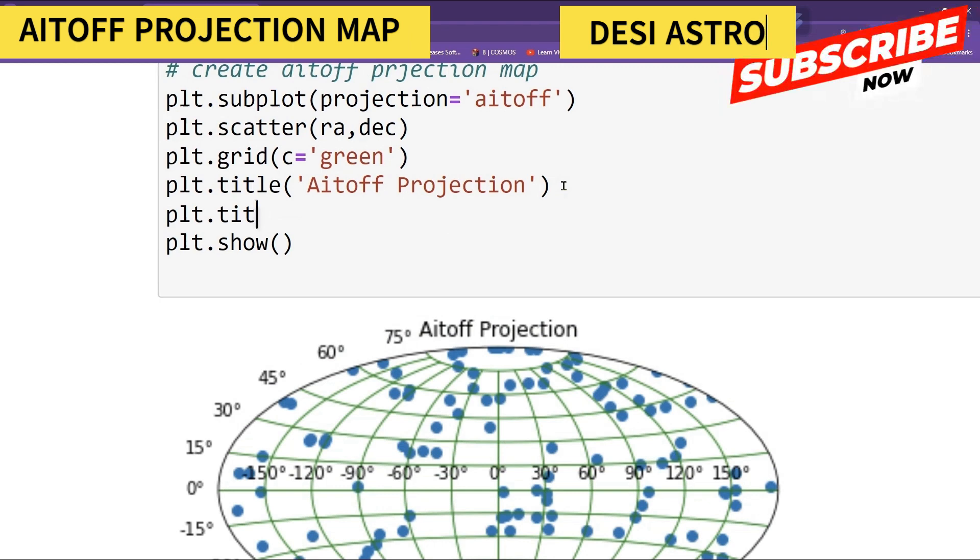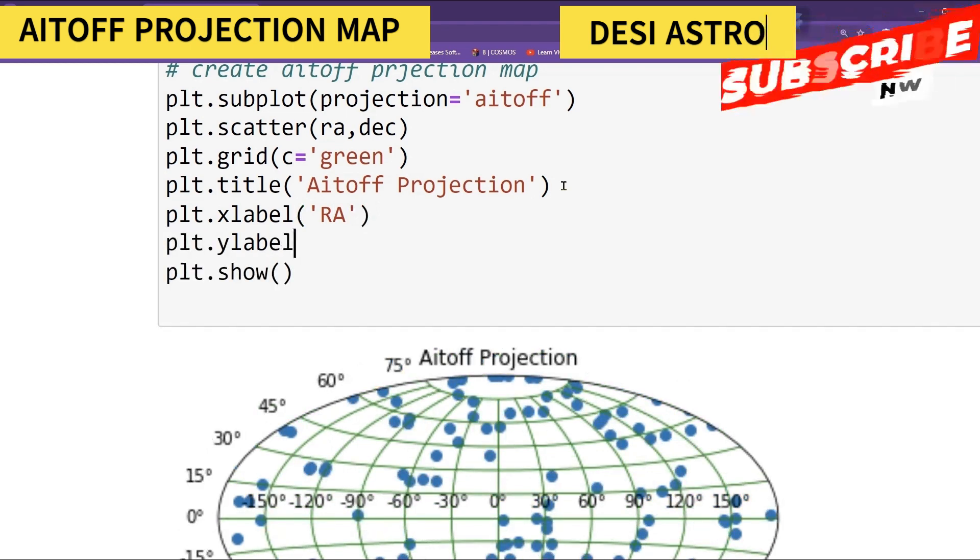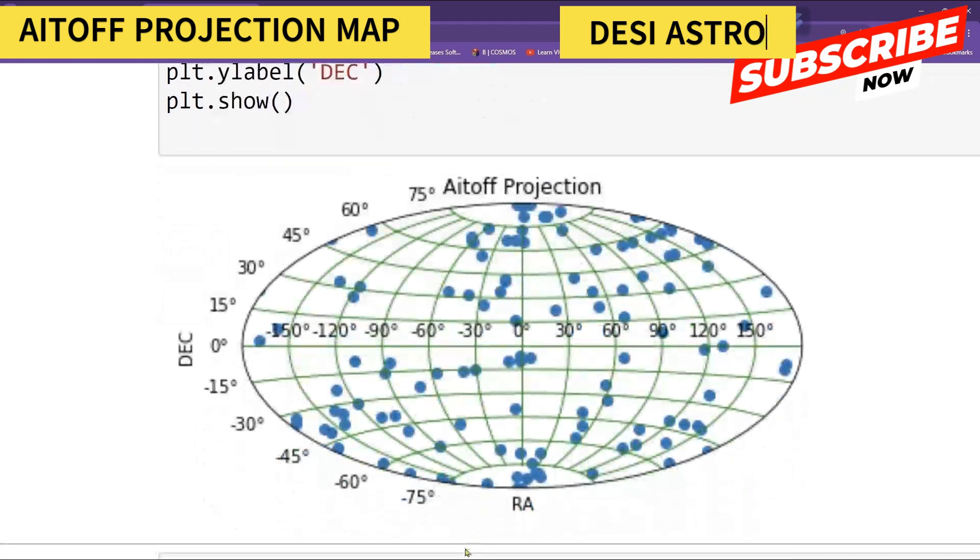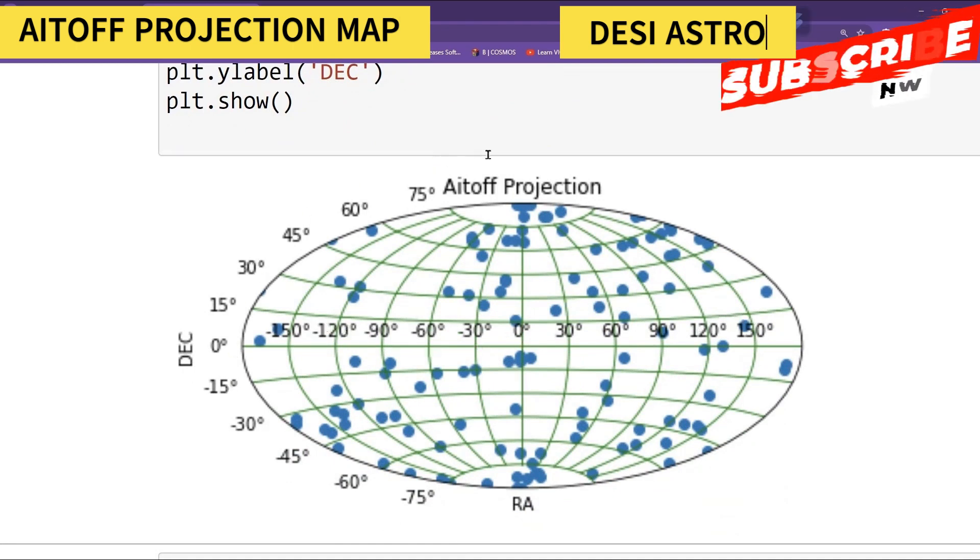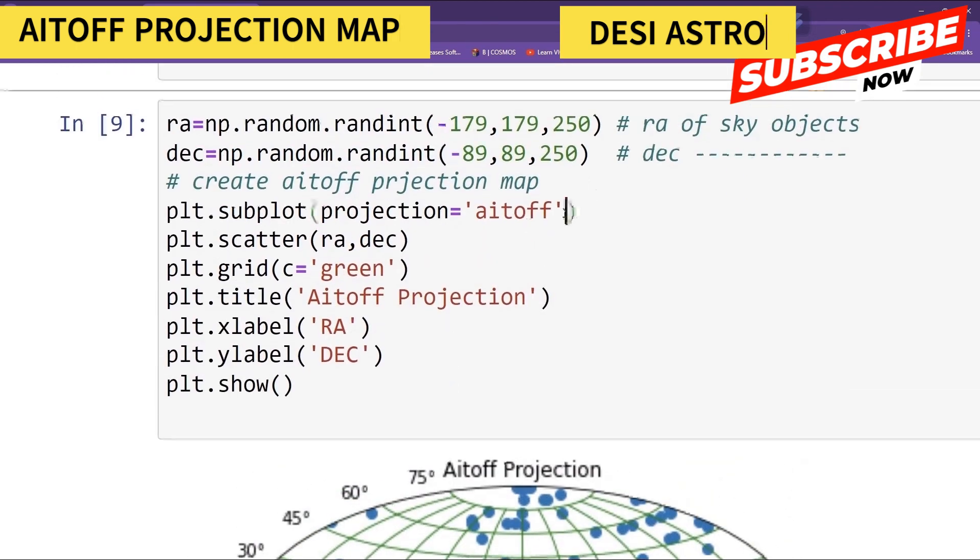And similarly, you can give your X and Y label. So type plt.xlabel. X label is your RA, and Y label is your DEC. So you can see this is your RA, X axis is your RA, and this is your DEC. DEC is here in degrees and RA is also in degrees, right?